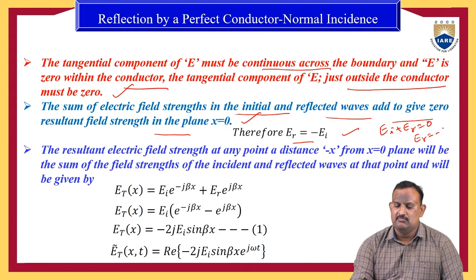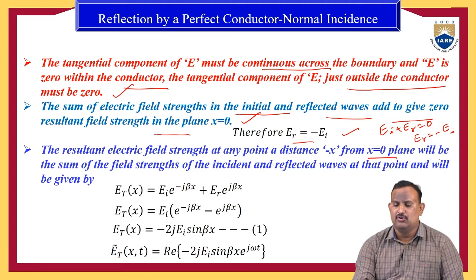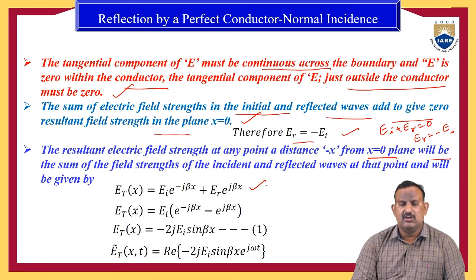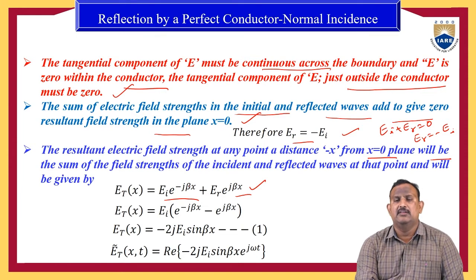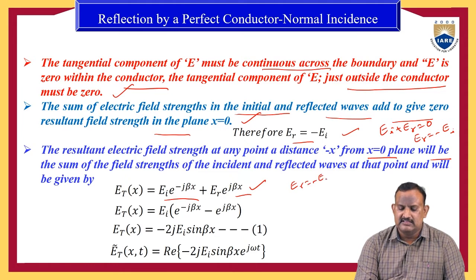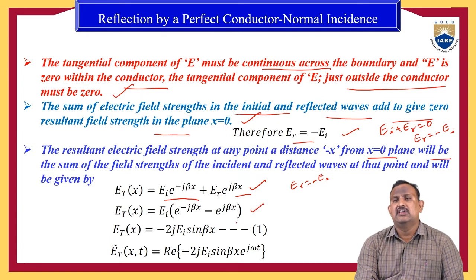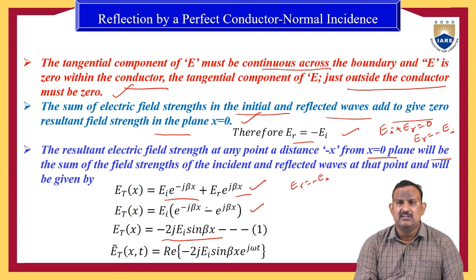We can express this as E_reflected = −E_incident, or E_I + E_r = 0. The resultant electric field at any point at distance x from the x = 0 plane is the sum of incident and reflected waves: E_T(x) = E_I · e^(−jβx) + E_r · e^(+jβx). Substituting E_r = −E_I and simplifying gives E_T(x) = E_I(e^(−jβx) − e^(+jβx)) = −2j · E_I · sin(βx).